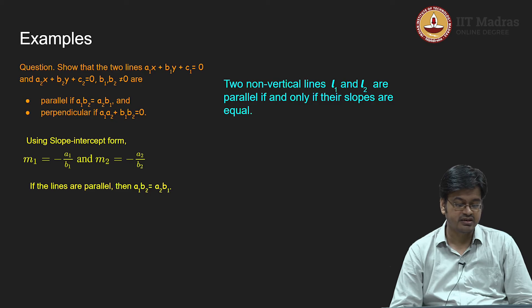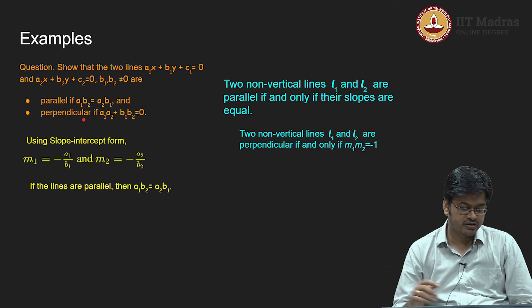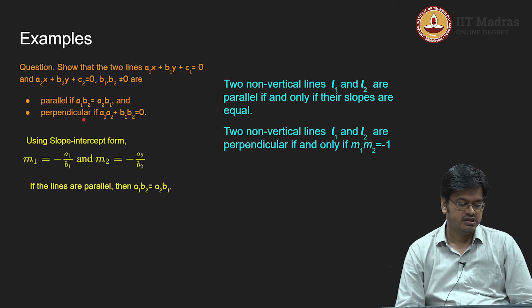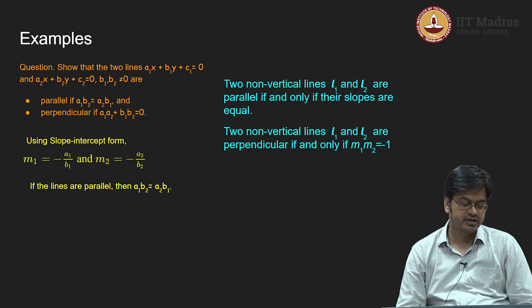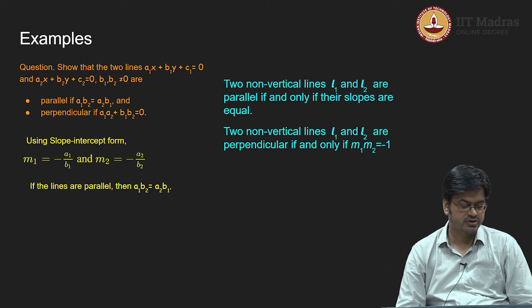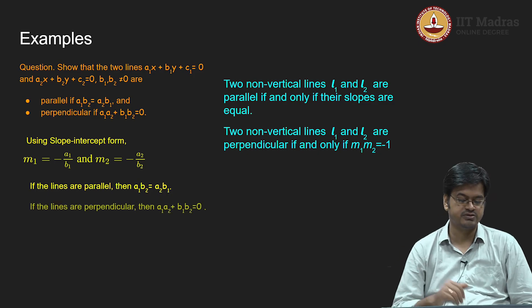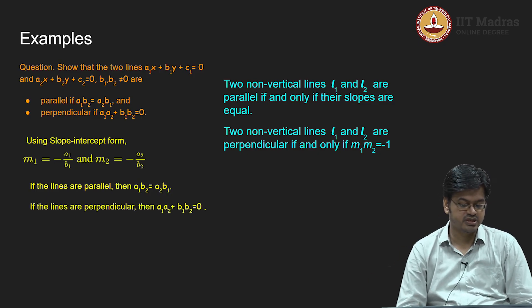Similarly, we know that the product of slopes of perpendicular lines is minus 1. Multiplying m₁ and m₂ and equating to −1, the minus signs cancel and we get (a₁/b₁)(a₂/b₂) = −1. Taking the denominator b₁b₂ to the right-hand side gives a₁a₂ = −b₁b₂, which means a₁a₂ + b₁b₂ = 0. Therefore, we have proved the result.